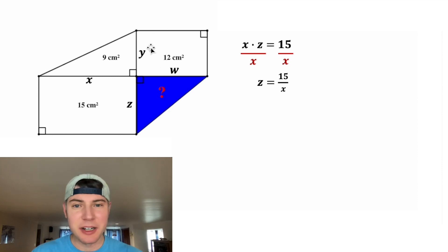And then if we go to this rectangle, Y times W is equal to 12. Divide both sides by Y, and we get W is equal to 12 over Y. So now let's update this Z to make it 15 over X, and let's update the W to make it 12 over Y. And then let's get rid of this stuff.